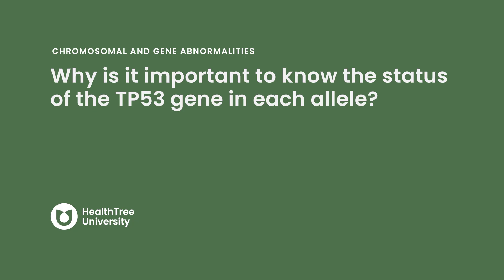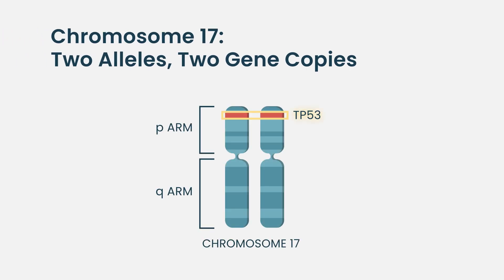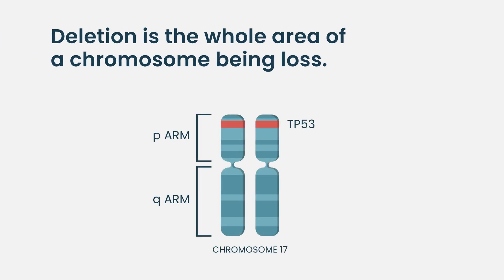Why is it important to know the status of the TP53 gene in each allele? You are looking at two P53 genes for every cell. The normal state — called wild type — is that both genes are present in their intact form. When we talk about deletions, a deletion refers to a whole area of the chromosome being lost, essentially pinching out that region and taking the P53 gene with it.